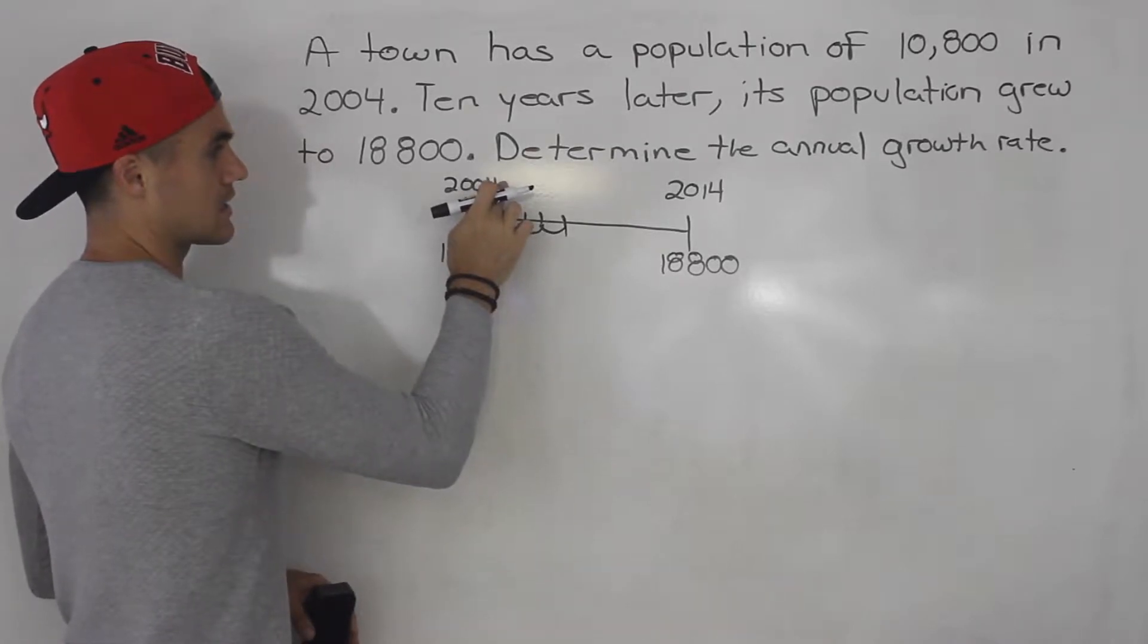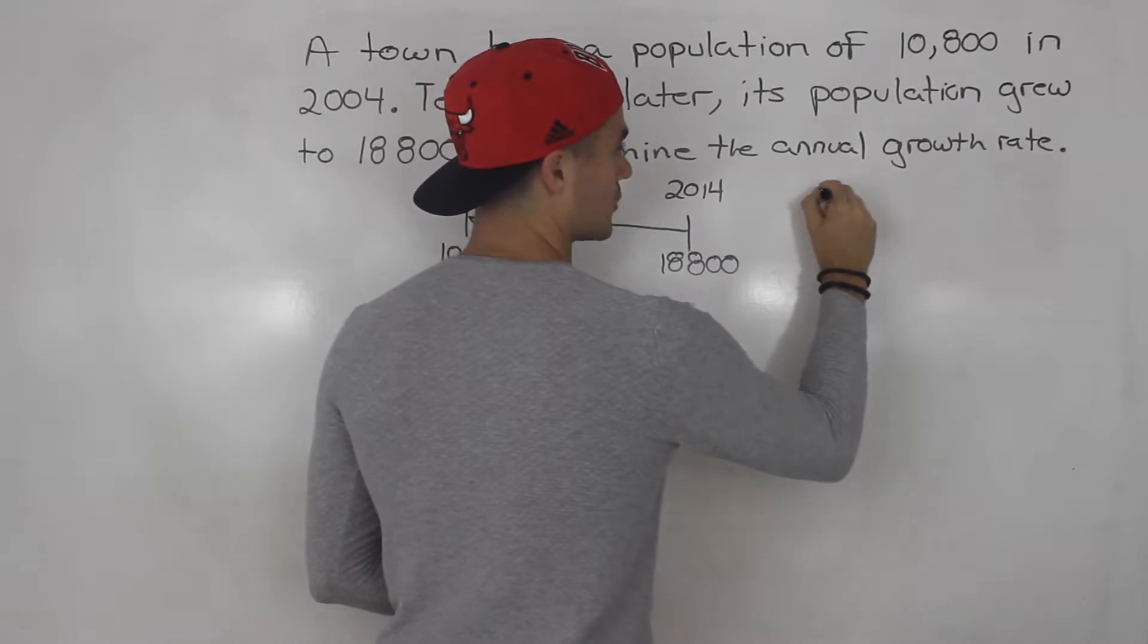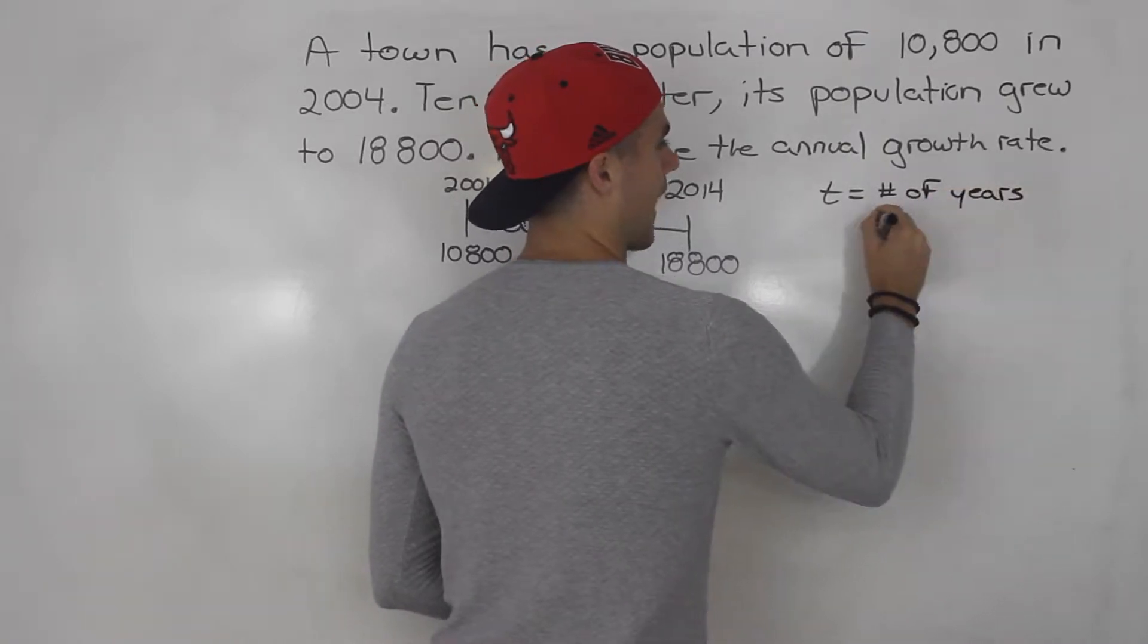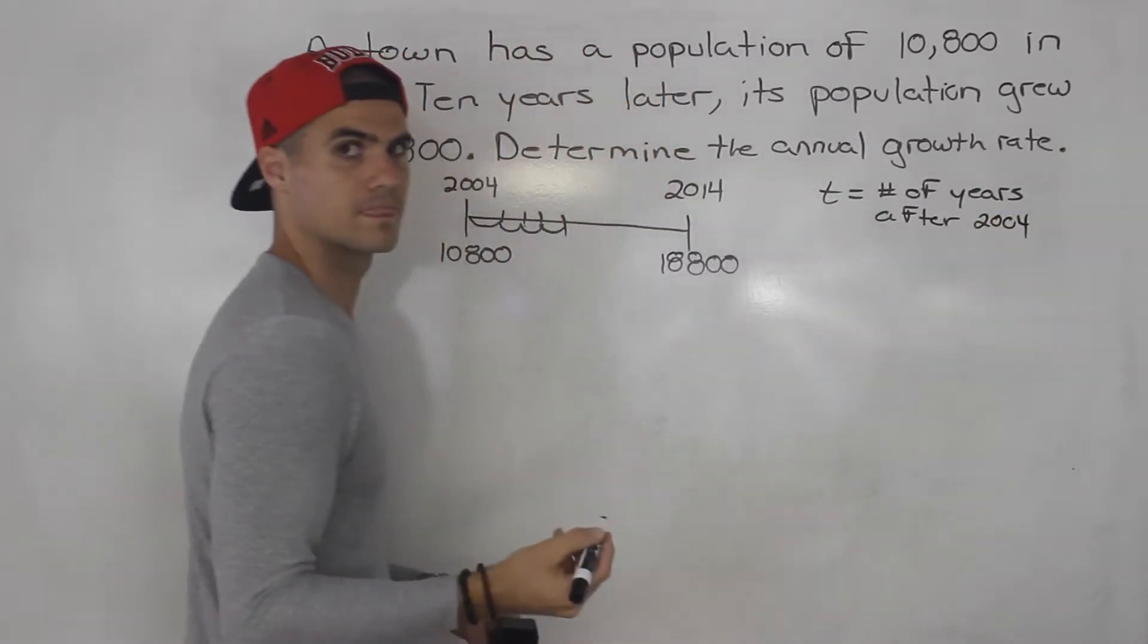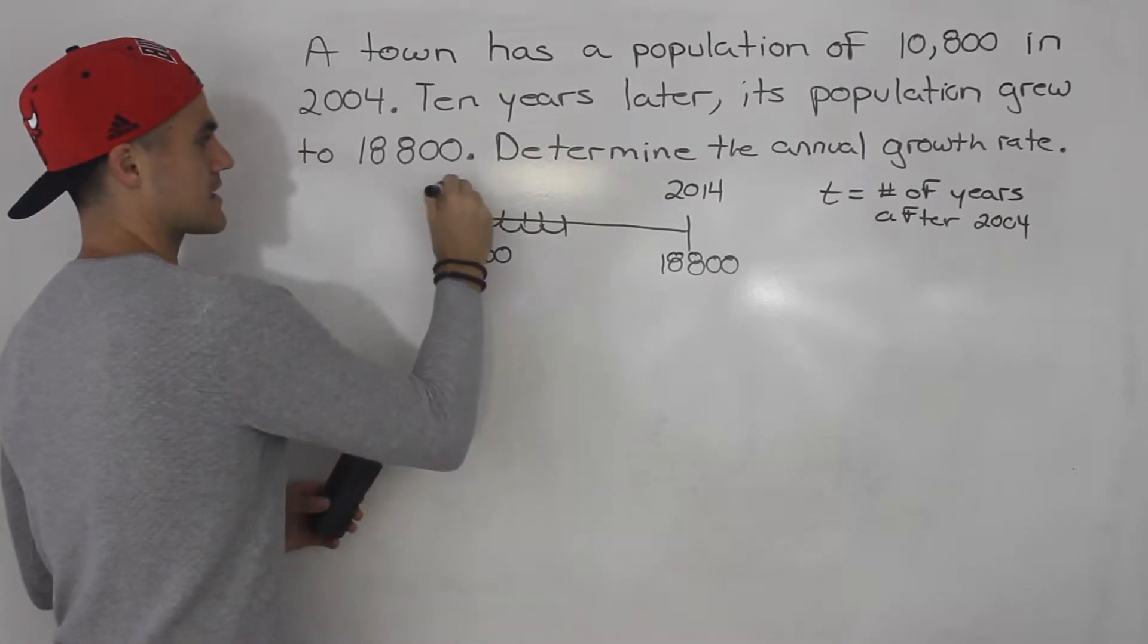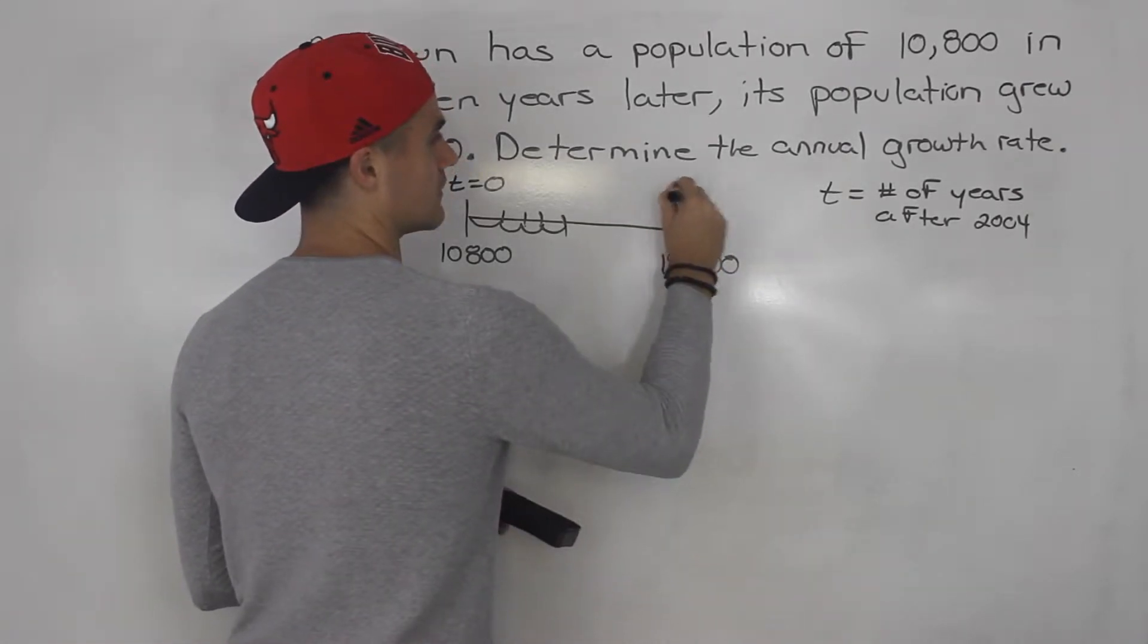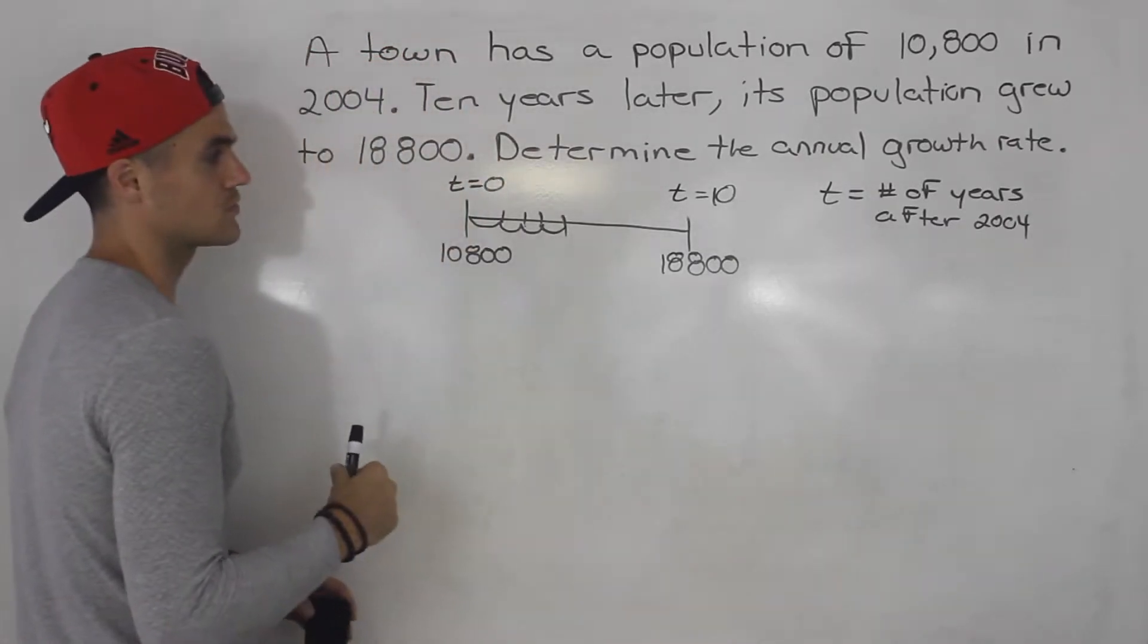Now instead of using this notation of years, I'm going to introduce another variable, let's say t, and t is going to represent the number of years after 2004. So at 2004, that is a t value of 0, and then 2014 that's going to have a t value of 10, which is 10 years after 2004.